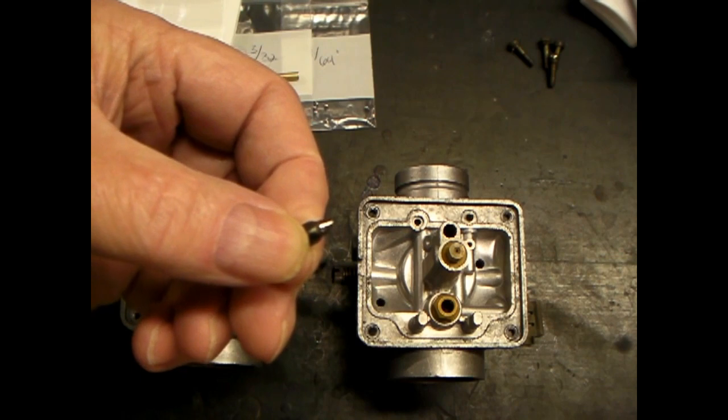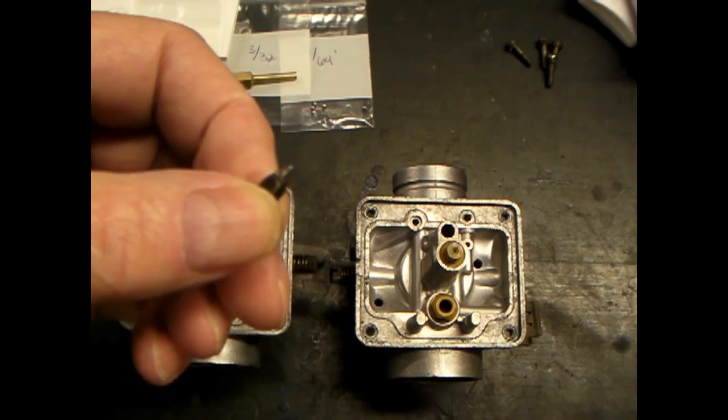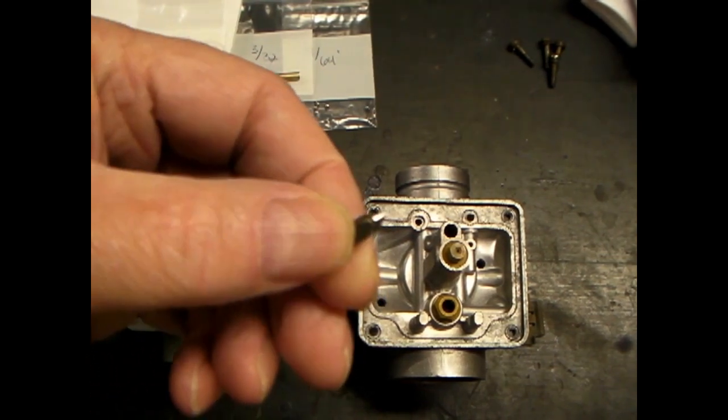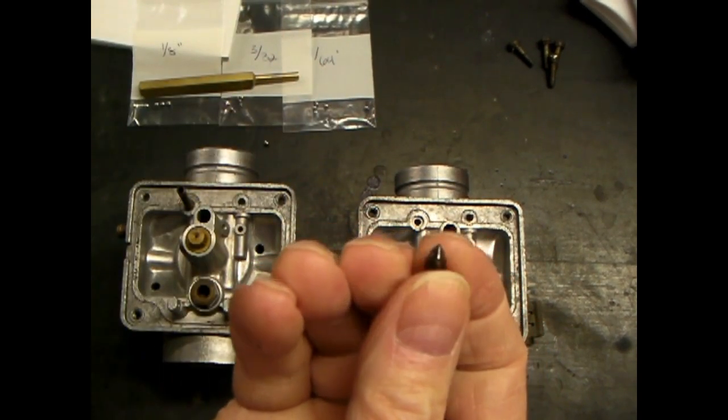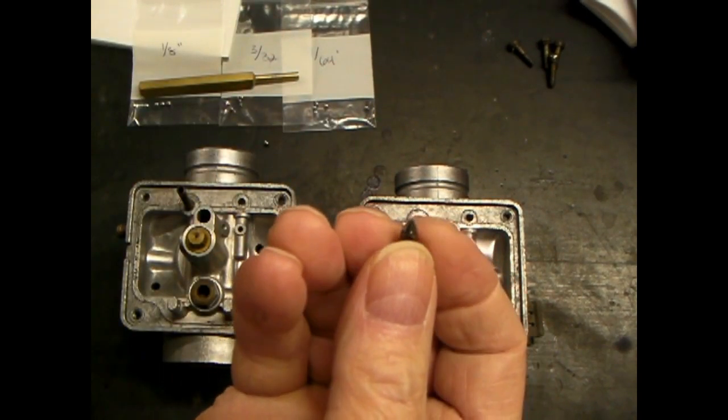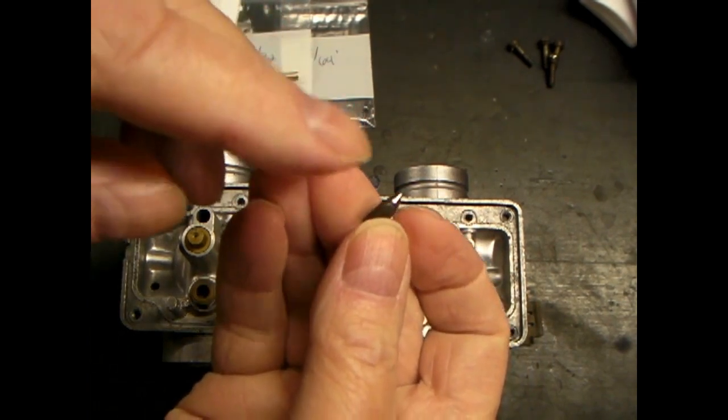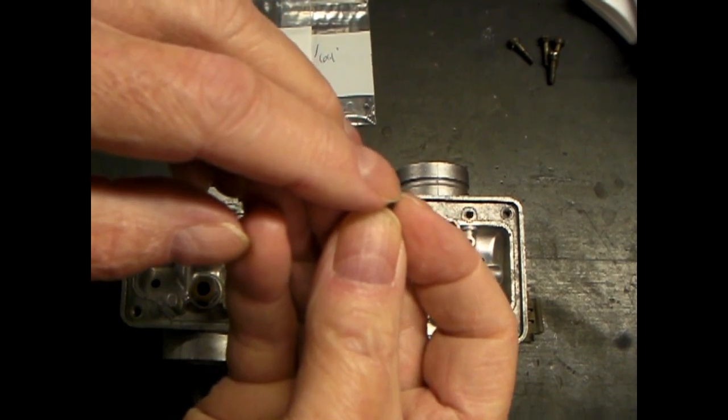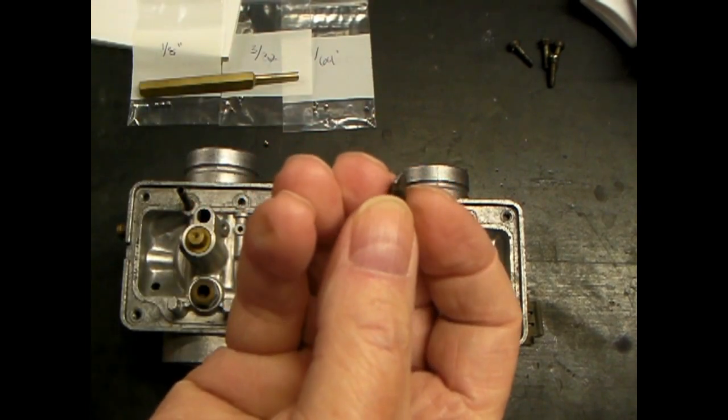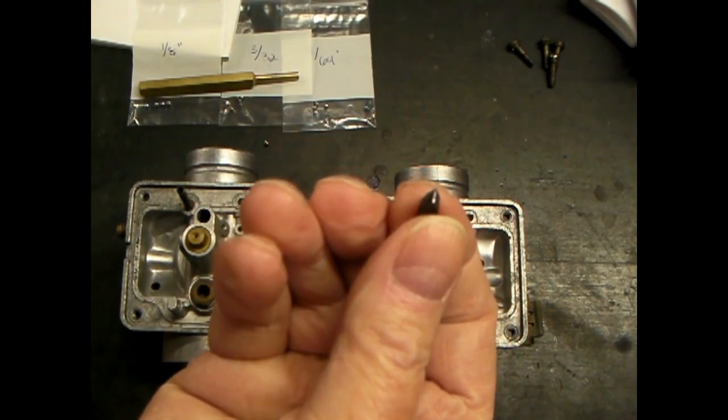Okay, this is a video about carburetor float needles that go bad on a lot of small carburetors. You'll see a lot of people on eBay selling these things. This one has a few marks here on this pointed cone.